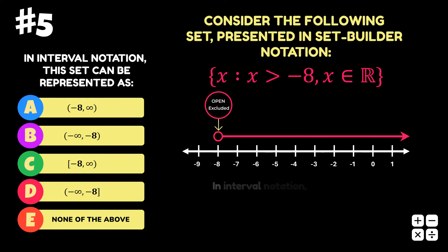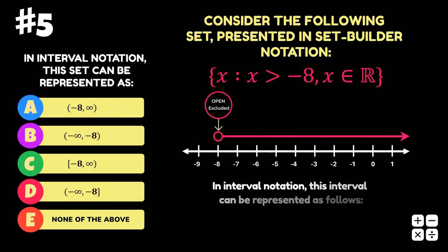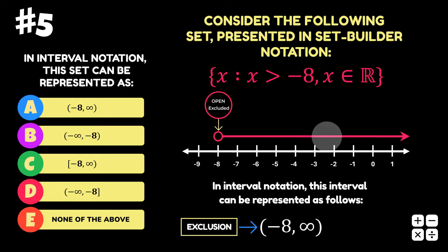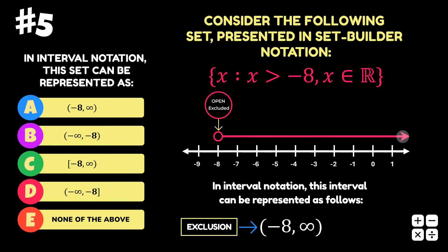We can represent this set in interval notation as follows, where the round bracket on the left indicates the exclusion of the left endpoint, negative 8, and the infinity symbol on the right indicates that the real numbers included in this interval go on forever in the positive direction of the number line. Therefore, the answer to this question is option A.